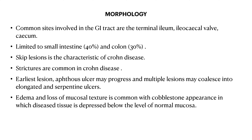Regarding morphology, although Crohn's disease may present anywhere in the GIT, the most common sites are the terminal ileum, ileocecal valve, and cecum. Crohn's disease is limited to the small intestine in up to 40% of cases and to the colon in up to 30% of cases.